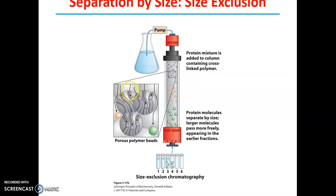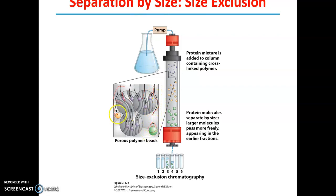The smaller molecular weight proteins will find their way into these porous polymer beads, and it will take a longer time for them to travel through. The heavier molecular weights pass through the side because they cannot enter through the beads, so they pass through the side — as you can see here.